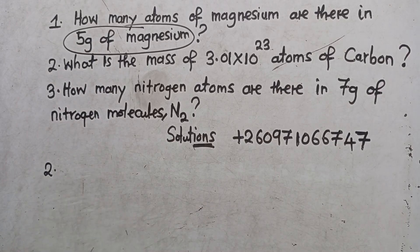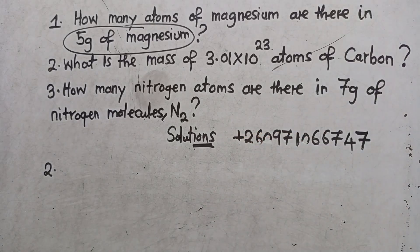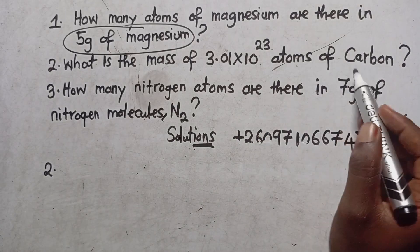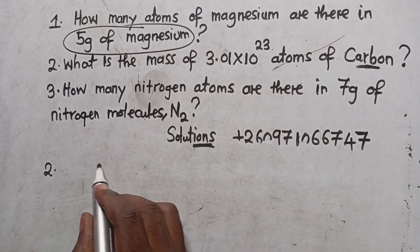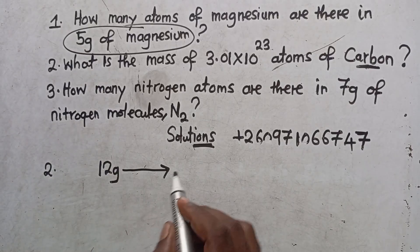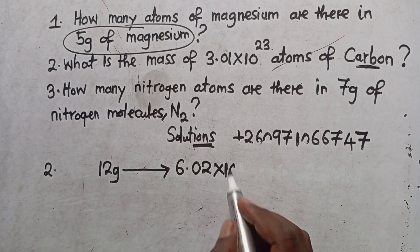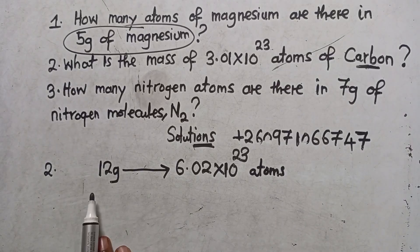We move to question number two: what is the mass of 3.01 times 10 to the power 23 atoms of carbon? The mass number for carbon is 12 grams per mole. Since I want to get the mass, I say 12 grams is equivalent to 6.02 times 10 to the power 23 atoms of carbon. I gave you this when I was teaching — where I said one mole of a substance contains this number of particles.